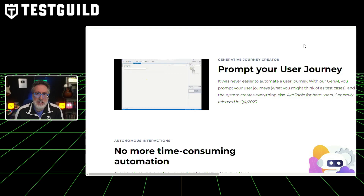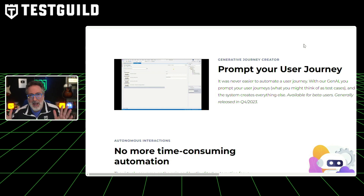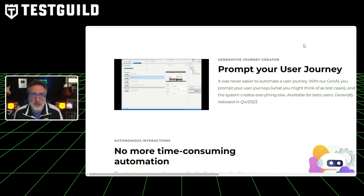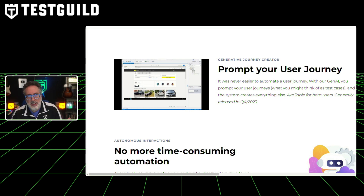First up is a new feature by TestResults that I think is going to start gaining more and more popularity. On this landing page, there's something called Prompt Your User Journey — a Generative Journey Creator. TestResults has unveiled its groundbreaking Gen AI-powered journey creator. It revolutionizes the way test cases are designed, and users can now simply prompt their desired user journey, and the system autonomously crafts the precise test steps tailored to the application. Definitely check out the video embedded in the landing page because it goes over this feature and how helpful it's going to be.